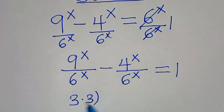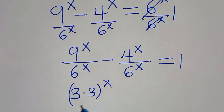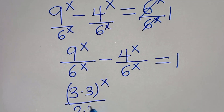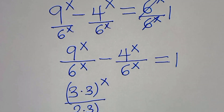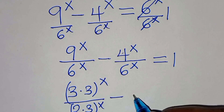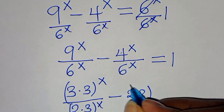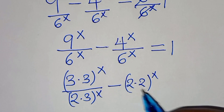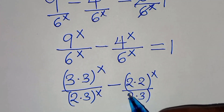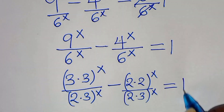Next, we express 9 as 3 times 3 raised to the power of x, divided by 6, which is 2 times 3, times 3 raised to the power of x. Then subtract 4, which is 2 times 2, raised to the power of x, divided by 6, which is 2 times 3, raised to the power of x. This is equal to 1.